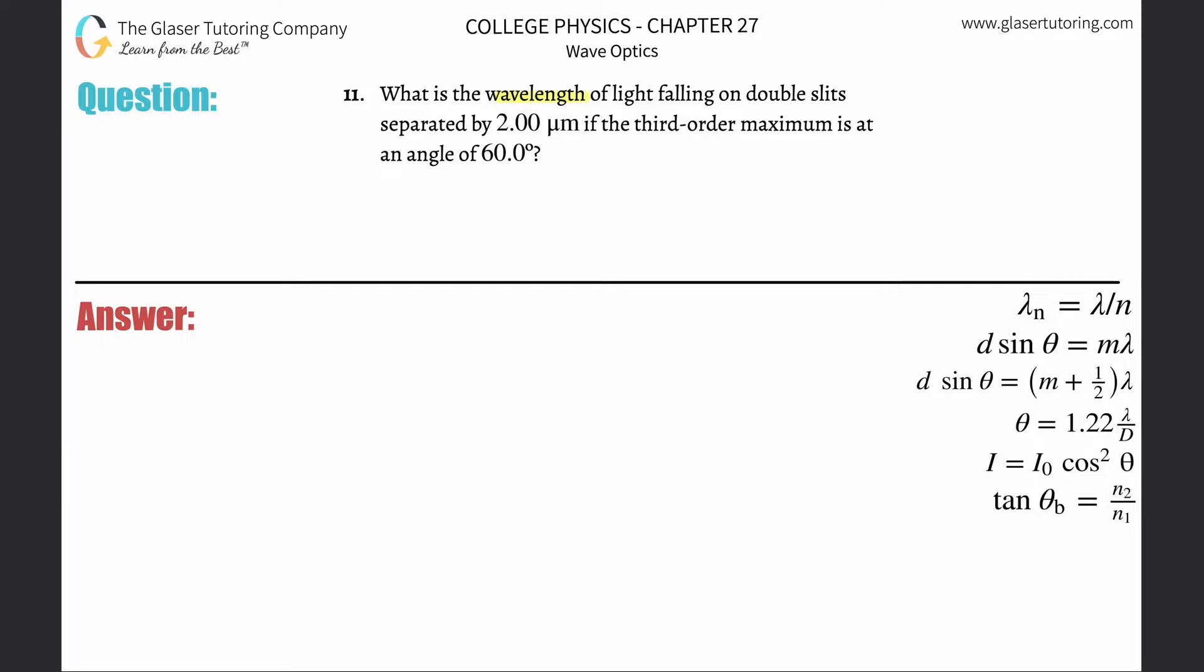Number 11, what is the wavelength of light falling on double slits separated by 2 micrometers if the third order maximum is at an angle of 60 degrees?